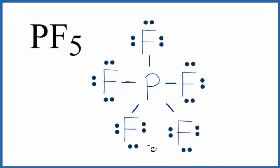Let's look at the molecular geometry. So the purple in the center, that's the phosphorus. We have five fluorine atoms.